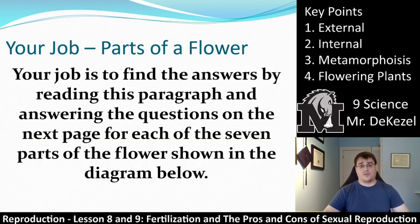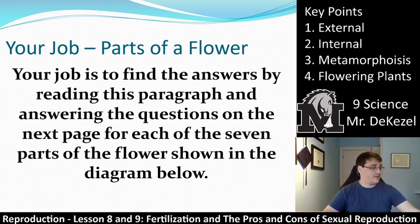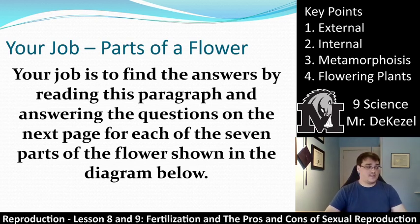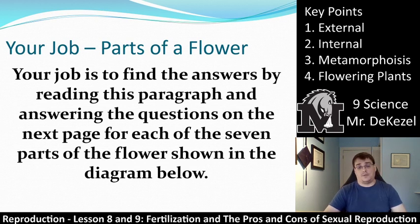I'd like you to find the answers by reading the paragraphs in your notes and describe the functions of the petal, stigma, style, stamen, sepal, ovary, and ovule. There are sections for you to write down their functions and to describe whether they are involved in the plant's reproduction. For example, a petal's job is to attract insects — that's why they're different colors. Pollen is the male gamete. Look up those different functions and note whether each structure is involved in reproduction or not.